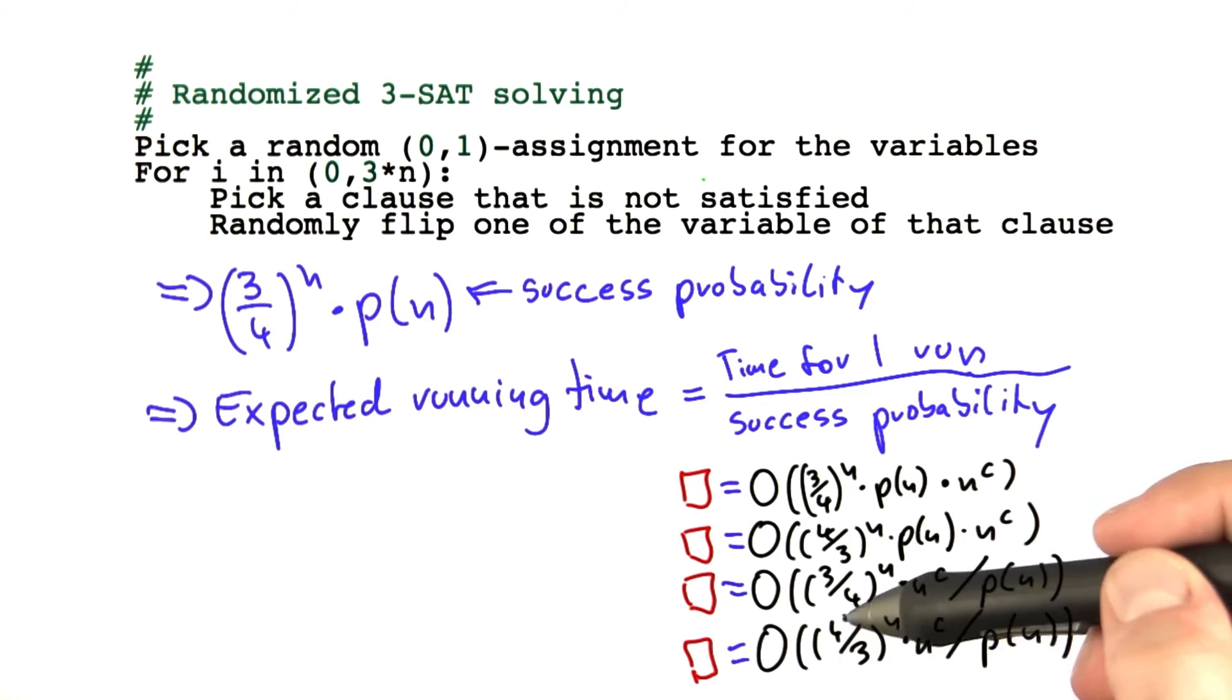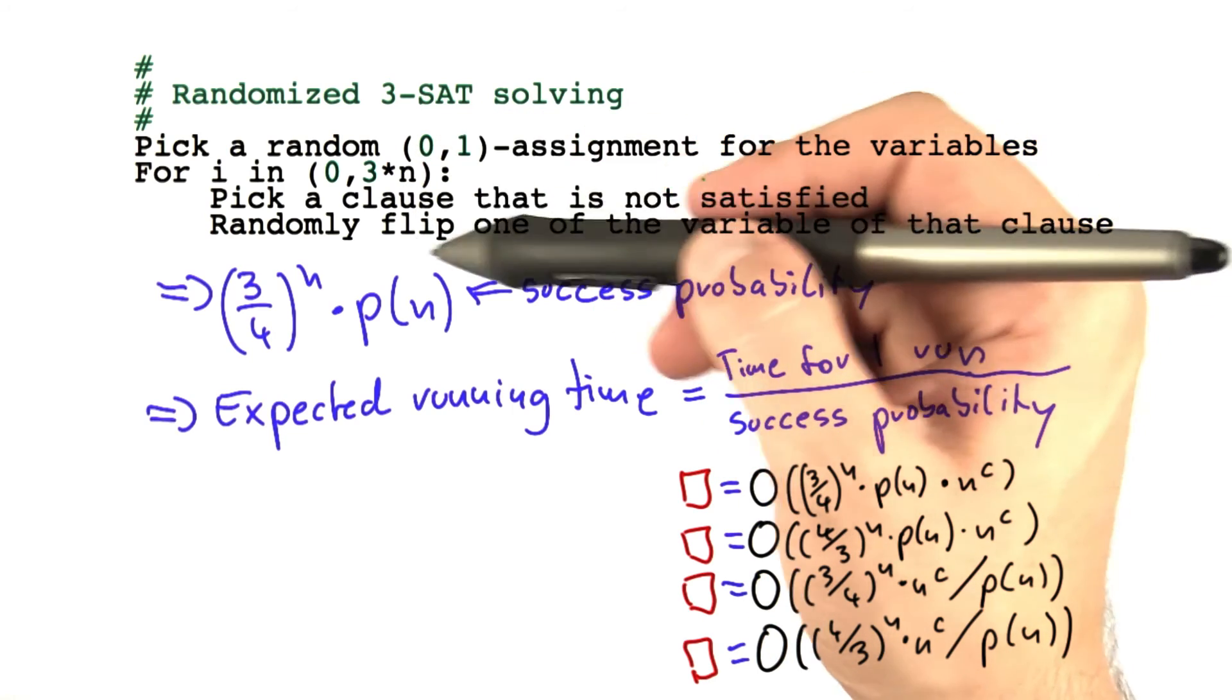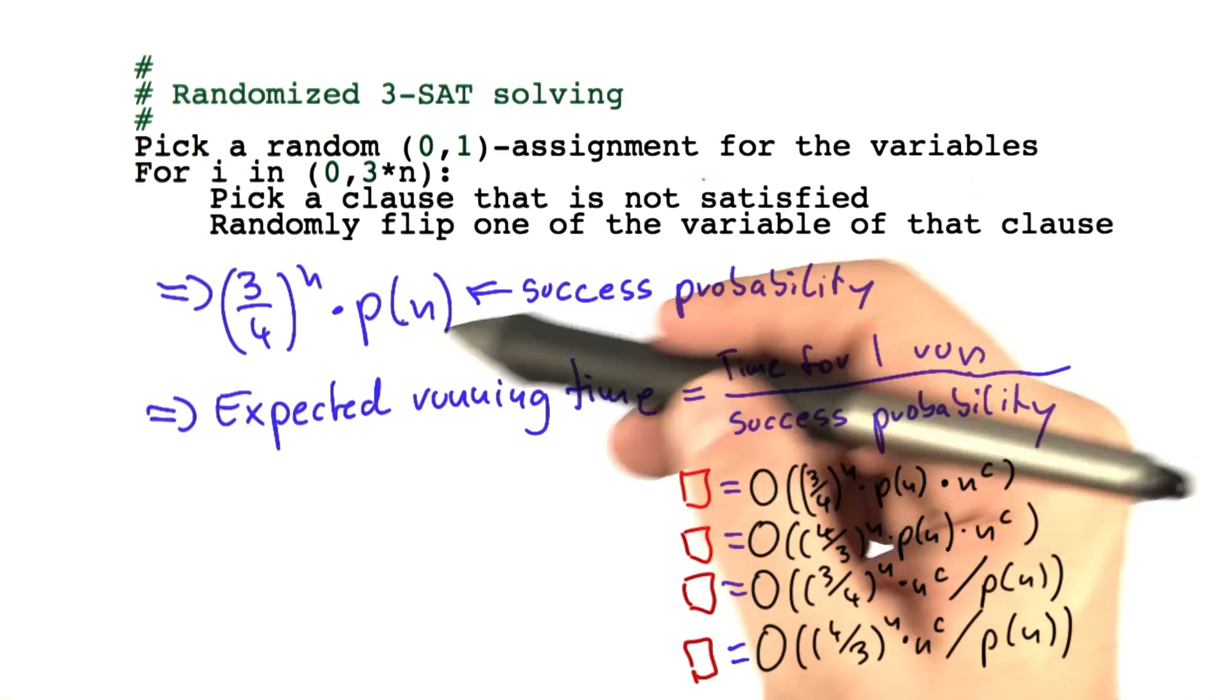Or finally, is it O of four-thirds to the power of n times the time required to run this algorithm divided by this polynomial?